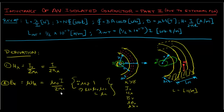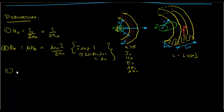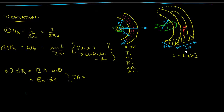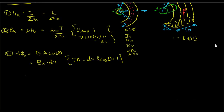Therefore H(x) is simply I over 2πx. Then B(x) equals μ times H(x), which becomes μ₀ times I over 2πx — because for non-magnetic materials μᵣ equals 1, so μ equals μᵣ·μ₀ equals μ₀. Moving to Step 3, the differential flux dΦ equals B·A·cosθ, which becomes B(x)·dx, since the surface area A is dx times 1 meter, and cosθ equals 1 because the surface normal is parallel to the flux lines (θ = 0°).